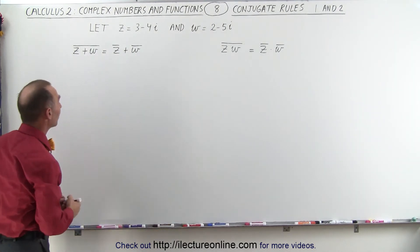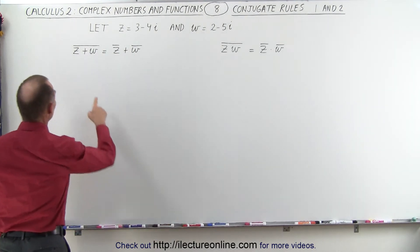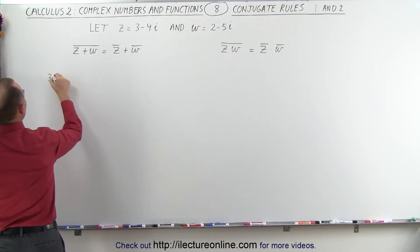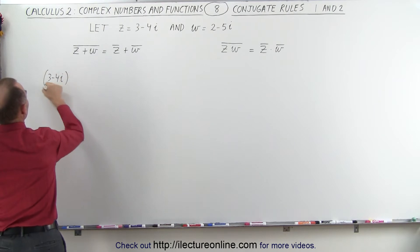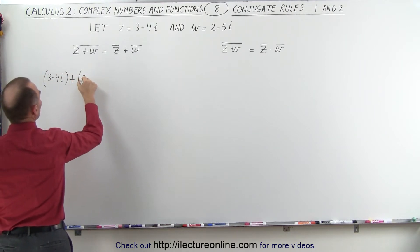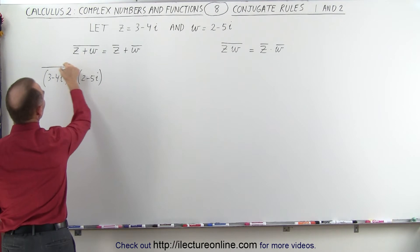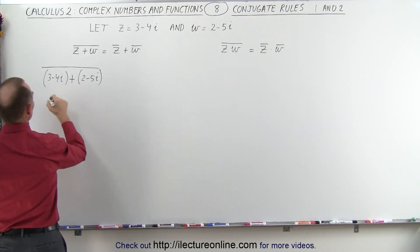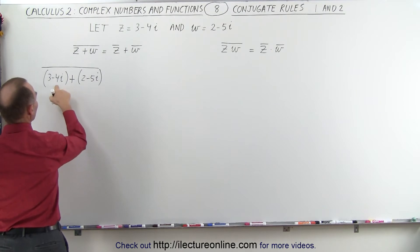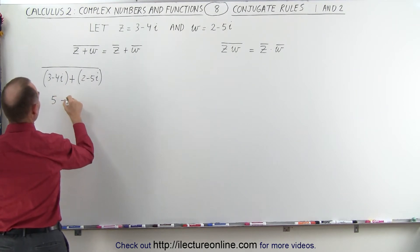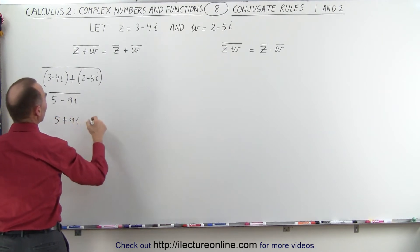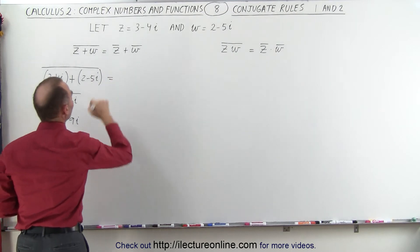So let's try it with an example and see if this works. First we're going to add the two together: we take 3 minus 4i and add it to 2 minus 5i, and then take the conjugate of that. That becomes 3 plus 2 which is 5, and minus 4i minus 5i which is minus 9i. Taking the conjugate of that turns it into 5 plus 9i.